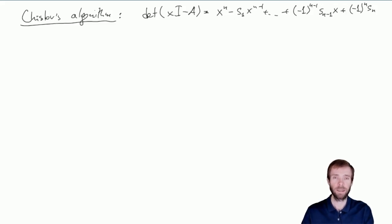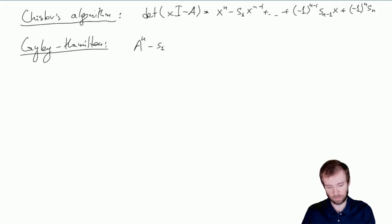And now we have the Cayley-Hamilton theorem that a matrix satisfies its characteristic equation. So if we plug in the matrix A into its own characteristic polynomial, we get a null zero matrix. So that's A to the power of n minus S₁ A to the power of n minus 1, and so on.